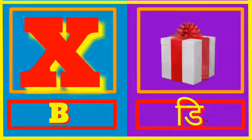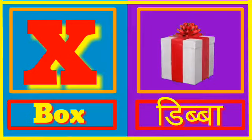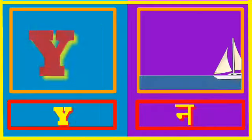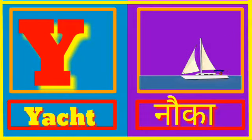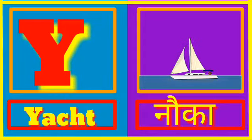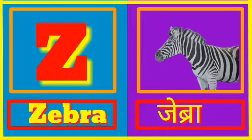X for Box. Box means Dibba. Y for Yacht. Yacht means Yacht. Z for Zebra. Zebra means Zebra.